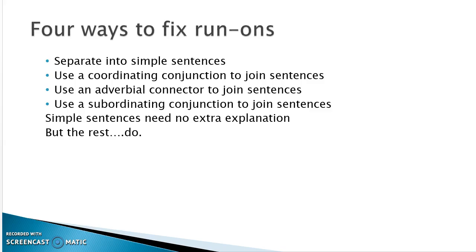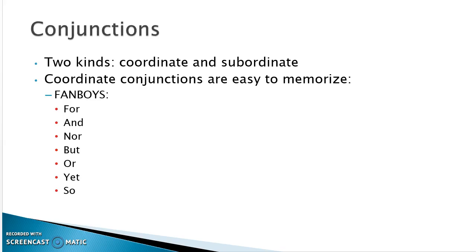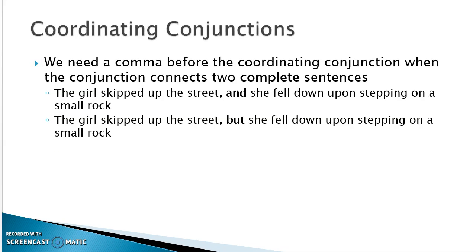In the world of sentence parts, there are conjunctions — two kinds: coordinating conjunctions and subordinating conjunctions. There are only seven coordinating conjunctions, which makes them easier to memorize. They spell out FANBOYS: For, And, Nor, But, Or, Yet, So. Their job is to hold together ideas. When joining two complete sentences, you need a comma and a coordinating conjunction — for example: 'The girl skipped up the street, and she fell down upon stepping on a small rock.'